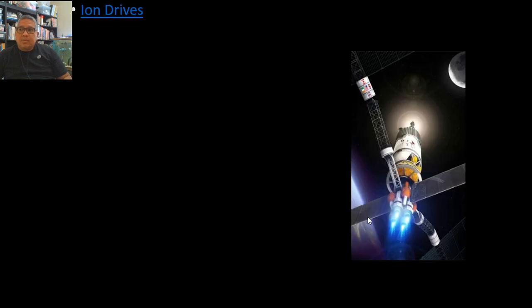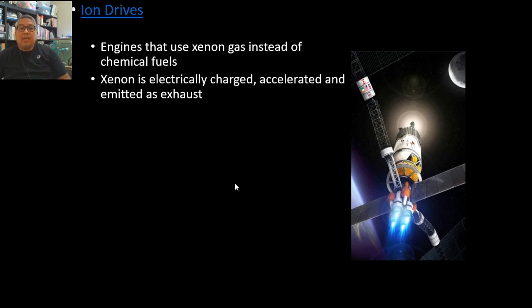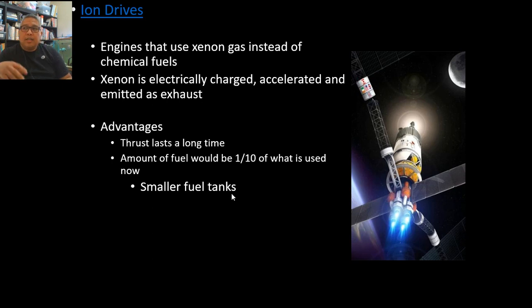Ion drives—they're thinking of using these when the space vehicle is already in space. Engines that use xenon gas instead of chemical fuels. The thing is with ion drives, it will not create that much thrust to push the vehicle and escape Earth's gravity. There's no way it can be used here, but it's very good when you use it up there. Xenon is electrically charged, accelerated, and emitted as exhaust, and it will slowly push the vehicle.